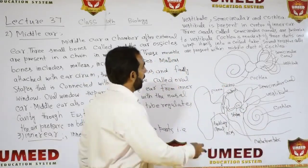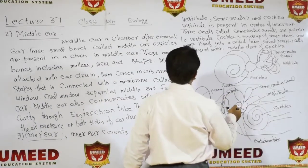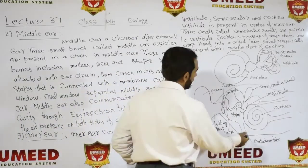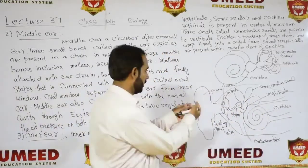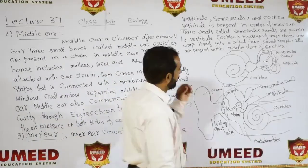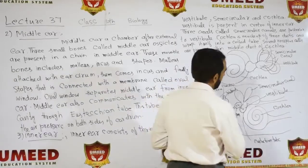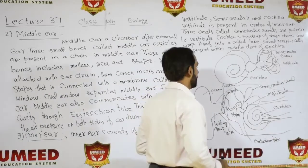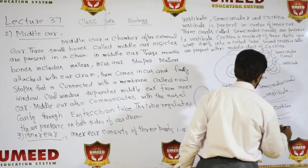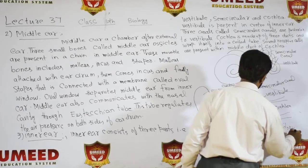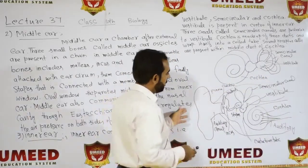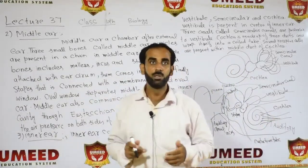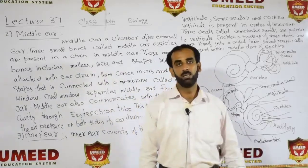The cochlea is made up of three ducts, coiled together. Sound receptor cells are present in the cochlea. These connect to the auditory nerves. The cochlea sends signals through the auditory nerve to the brain, which is how we hear.